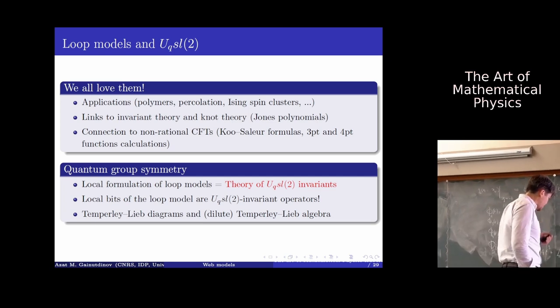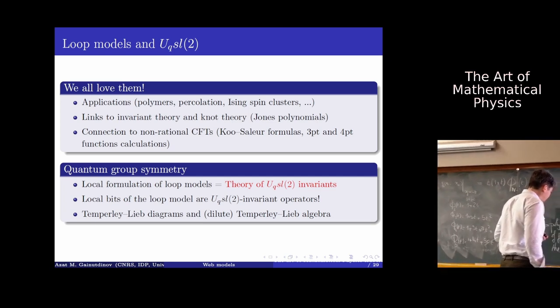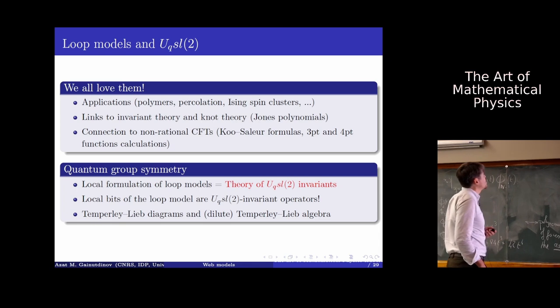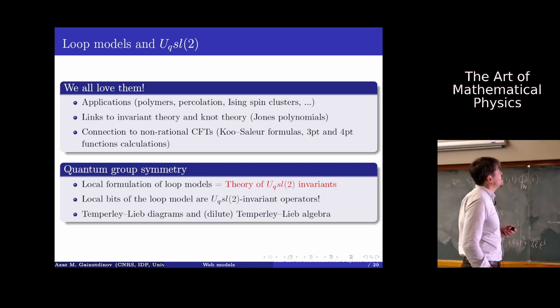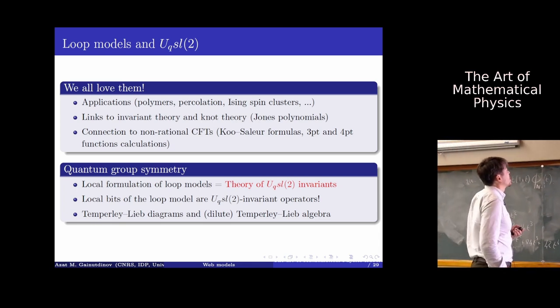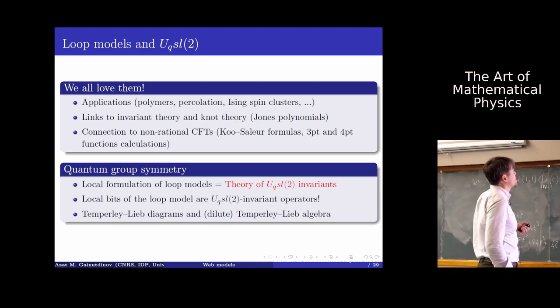Also in mathematics, loop models have deep connections to invariant theory and knot theory. For example, they are deeply connected to the Jones polynomial — the Jones invariant of knots. There is also a nice connection to non-rational CFTs via the famous Knizhnik-Zamolodchikov formula.